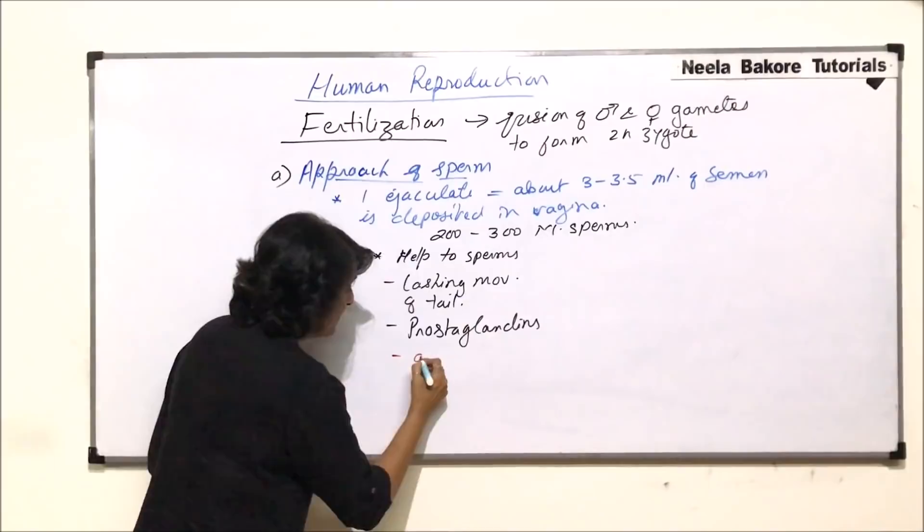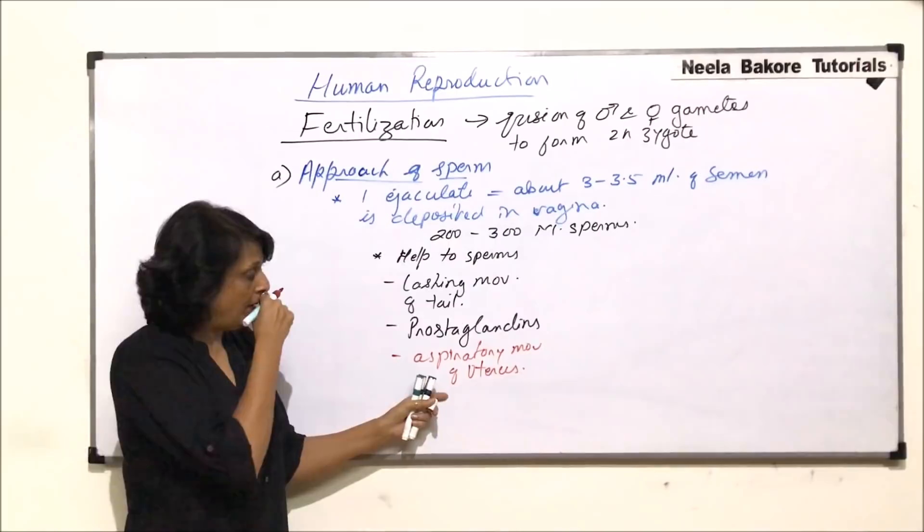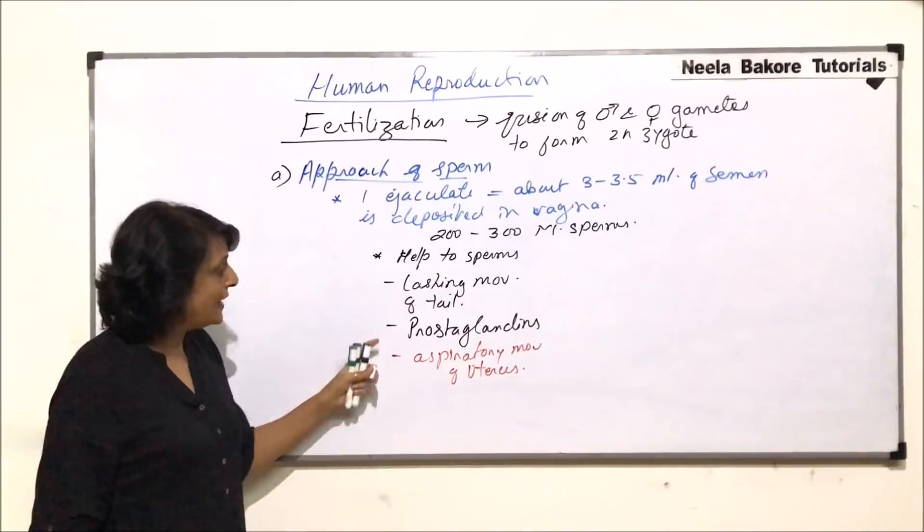The third thing is aspiratory movements of the uterus. Aspiratory movement is a sort of suction movement, because of which the sperms are pulled upwards from the vagina. So these three things — tail lashing, prostaglandins, and aspiratory movements — help in the movement of the sperm.